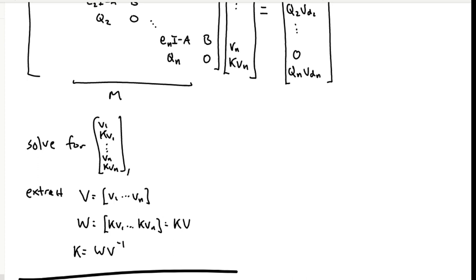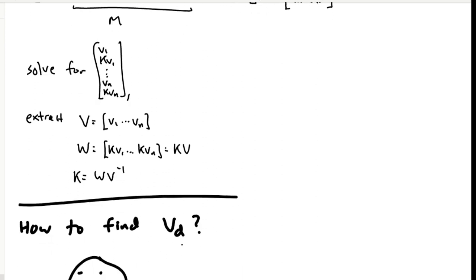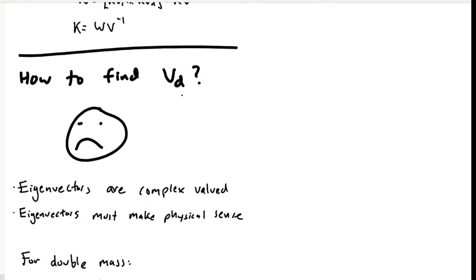The two problems with picking eigenvectors, however, is that they are usually complex-valued, and they have to correspond to physically sensical systems. So because the eigenvectors are complex-valued, and it's very hard to intuit what a complex-valued eigenvector should be, that can make sensibly picking them very hard.